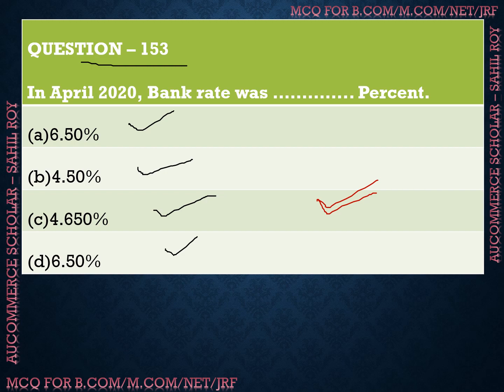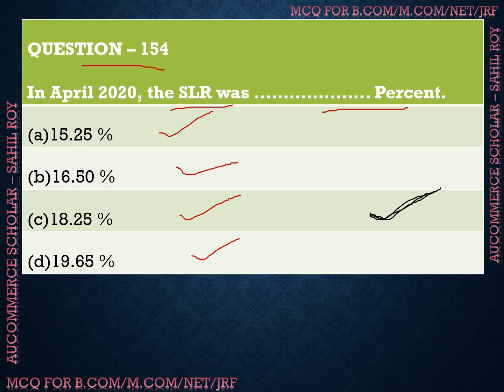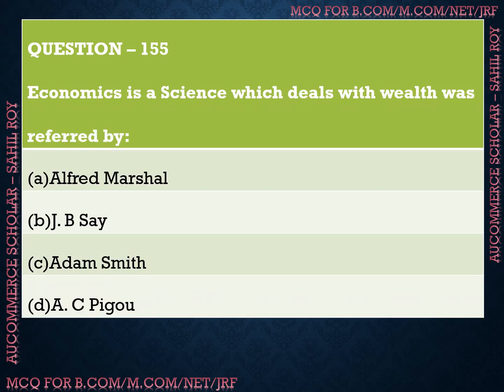Question number 154: In April 2020, the SLR was dash percent. This is the SLR rate fixed by RBI. We have four options: Option A is 15.25%, Option B is 16.50%, Option C is 18.25%, and Option D is 19.65%. The correct answer is Option C — 18.25%. Due to the recession before the coronavirus lockdown, RBI decided to reduce the SLR rate, bringing it down to 18.25% in April 2020.